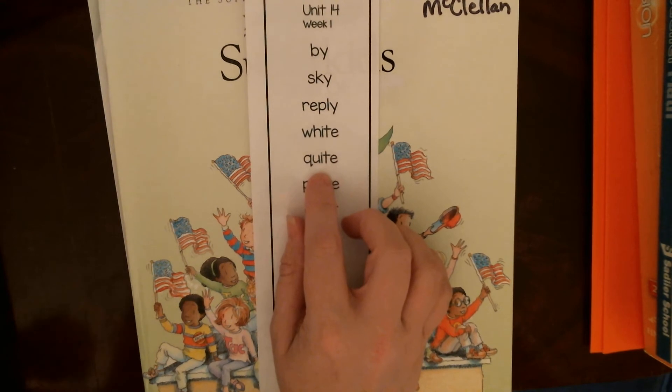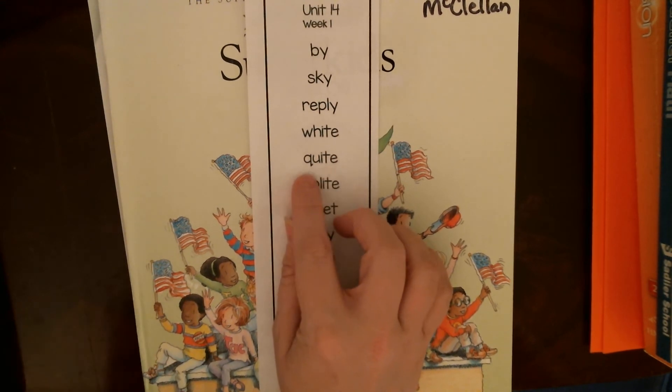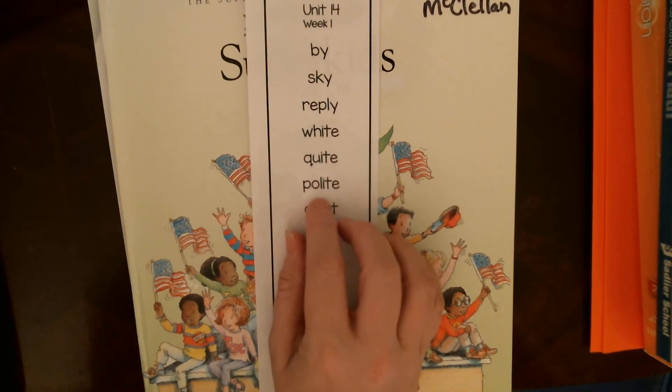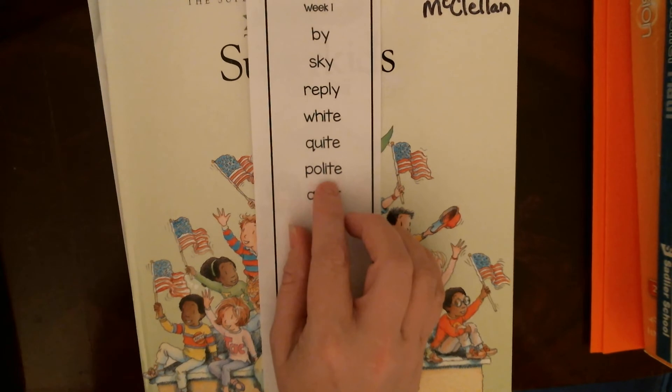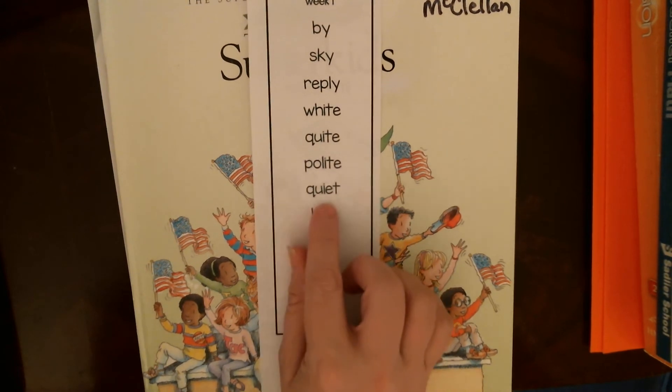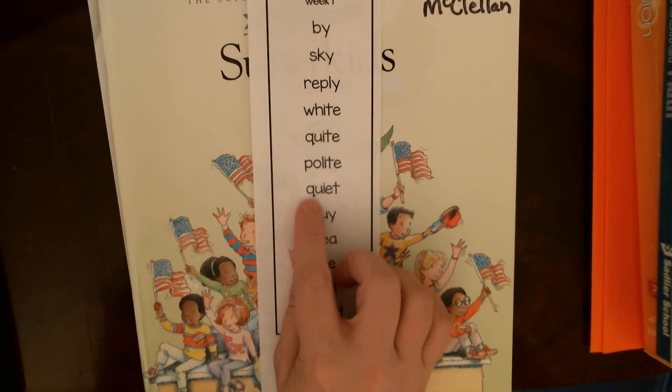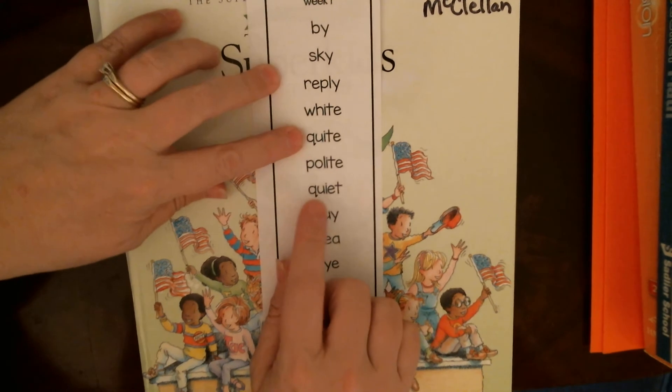And then quite. This is not quiet, guys. This is quite. I had quite a good time. I've had quite enough of the talking. This is polite. When you use your manners, you are polite. This is quiet. So make sure you're paying attention to these two words.